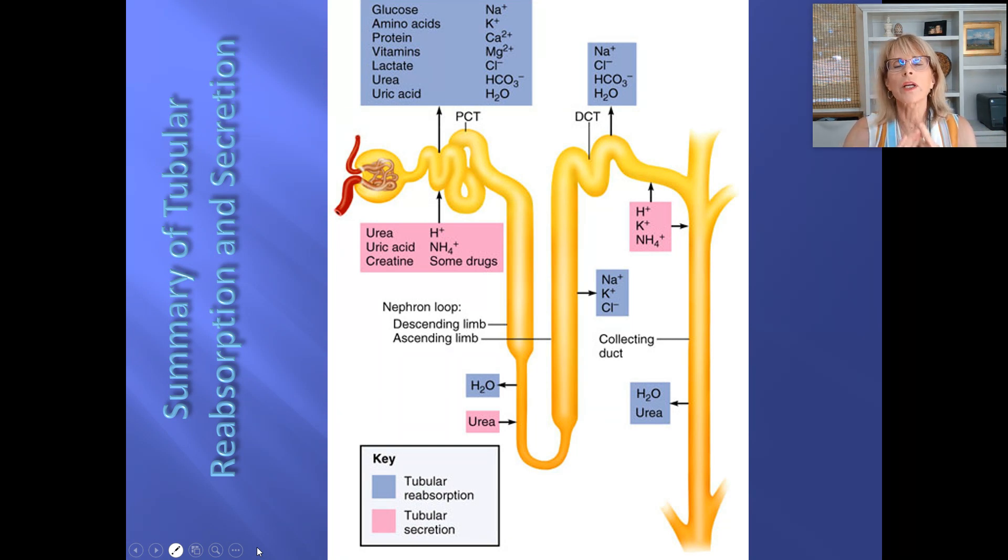And then we're talking about reabsorption, where the simple cuboidal epithelial cells grab something from inside of this tube from the filtrate, but technically it became tubular fluid, and put it back into the bloodstream. That's going to be all of this stuff that's in blue. All the stuff that's in blue is stuff that's going to get grabbed and put back into the body. It's stuff that the body says I'm not going to throw that out, I'm keeping that.